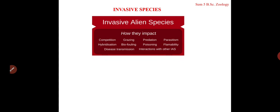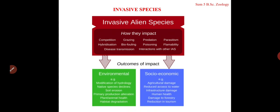Invasive alien species compete with the already existing species in the community through grazing, predation, parasitism, and so on. As a result, they outcompete the existing endemic native species, causing their population to decline. They may also hybridize with existing species, reducing genetic purity, and cause biofouling or poisoning of the existing ecosystem.